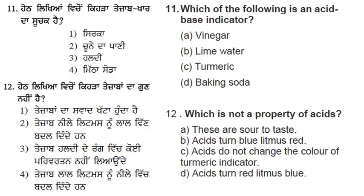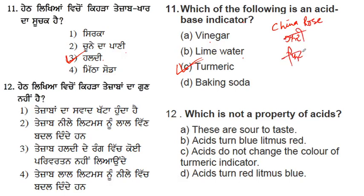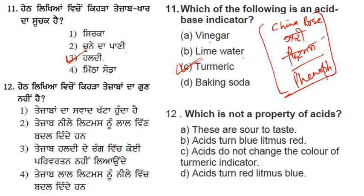The eleventh question: which of the following is an acid-base indicator? Vinegar is itself an acid; lime water is basic. Turmeric (haldi) is an acid-base indicator. There are four indicators in this chapter: China rose, turmeric, litmus paper, and phenolphthalein — a synthetic indicator. You must remember what color each gives with acid, base, and neutral solution.